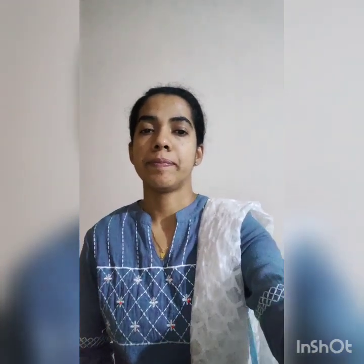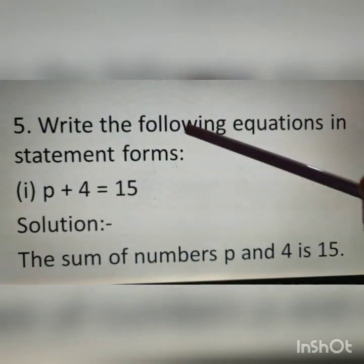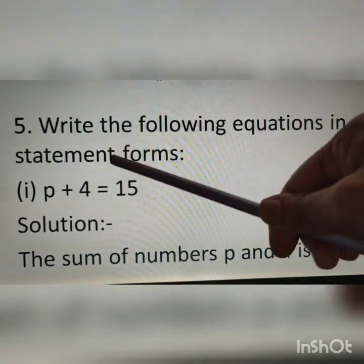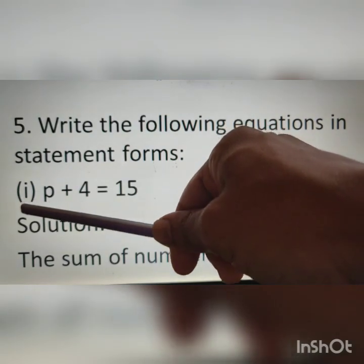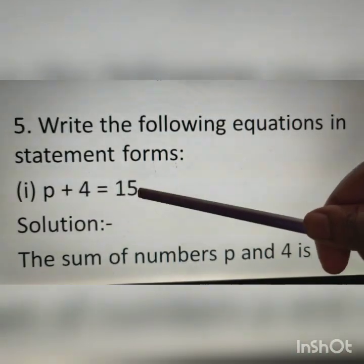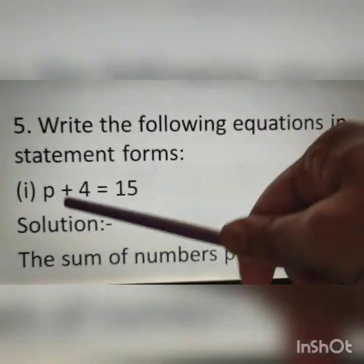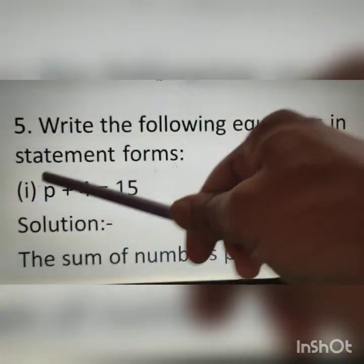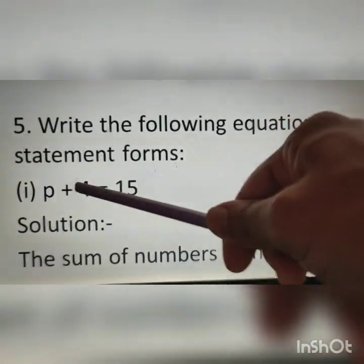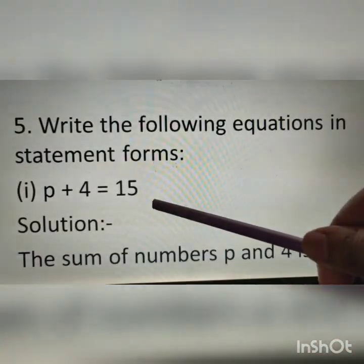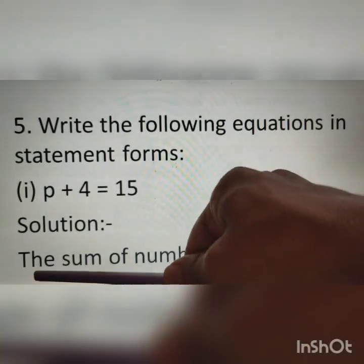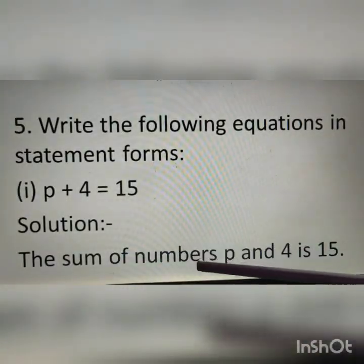In the next question, equations are given and we have to write them in statement form. Question number 5: write the following equations in statement form. First question: p plus 4 is equal to 15. Here p plus 4 means sum of p and 4 is equal to 15. Therefore, we can write: the sum of numbers p and 4 is 15.